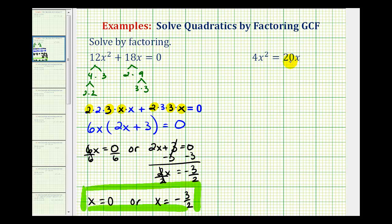Now looking at our second example, if we want to solve this equation by factoring, we first need to set the equation equal to zero. So the first step here will be to subtract 20x on both sides of the equation, and these are not like terms, so we'll have 4x squared minus 20x equals zero.